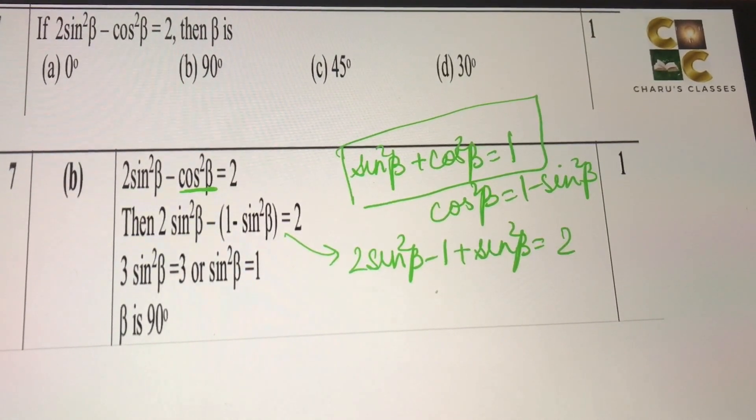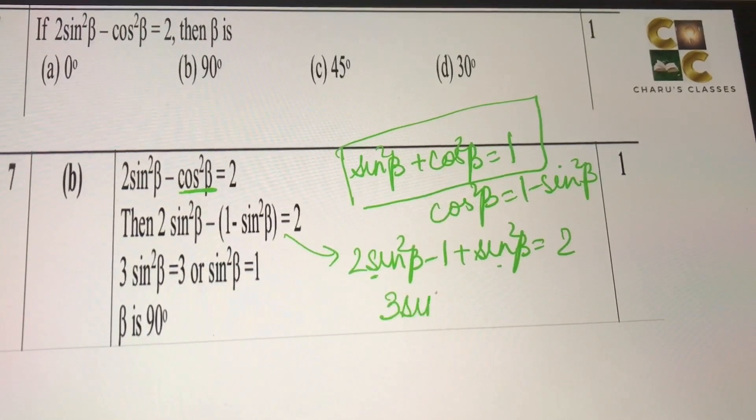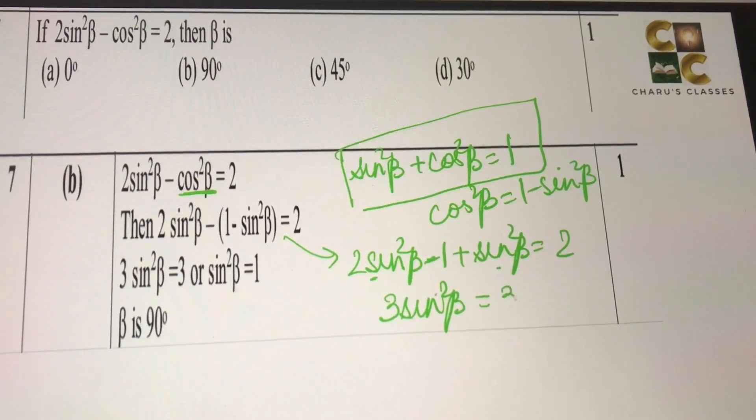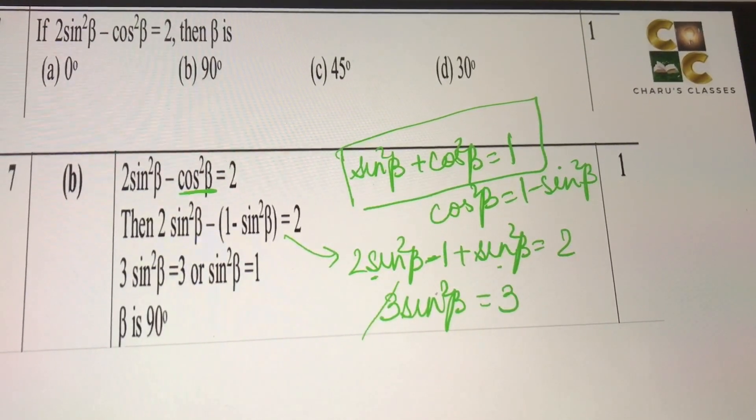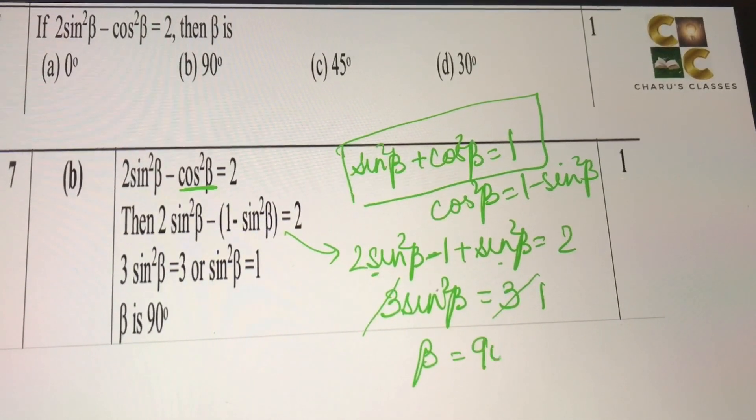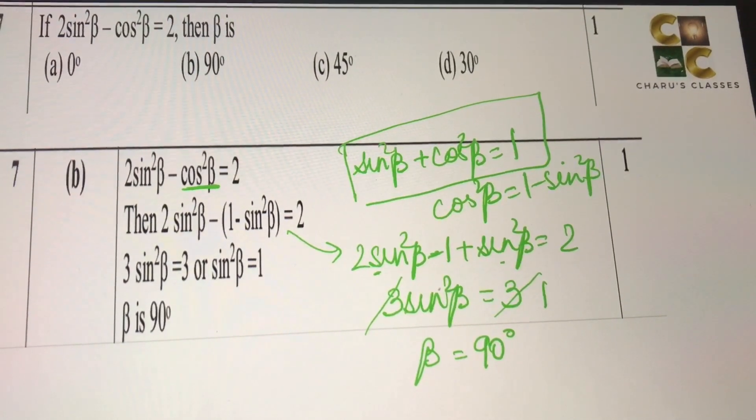So 2 sin square beta plus sin square beta, that is 3 sin square beta is equal to, this minus 1 will go there, 2 plus 1 is 3. So sin square beta is 1, therefore beta is equal to 90 degrees. Hope it is clear.